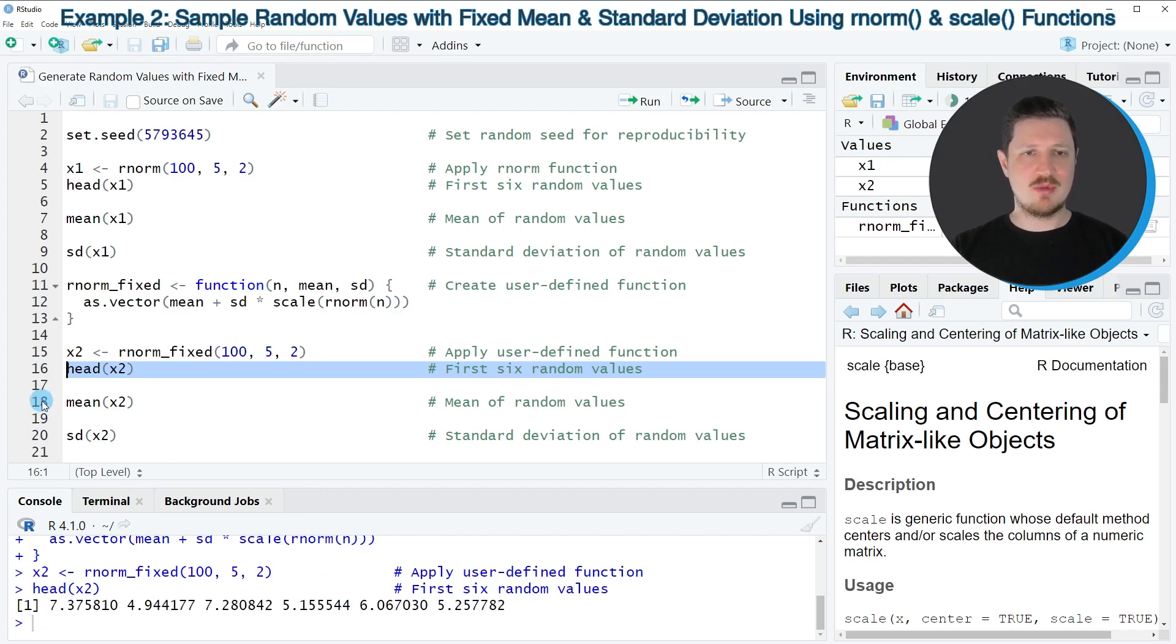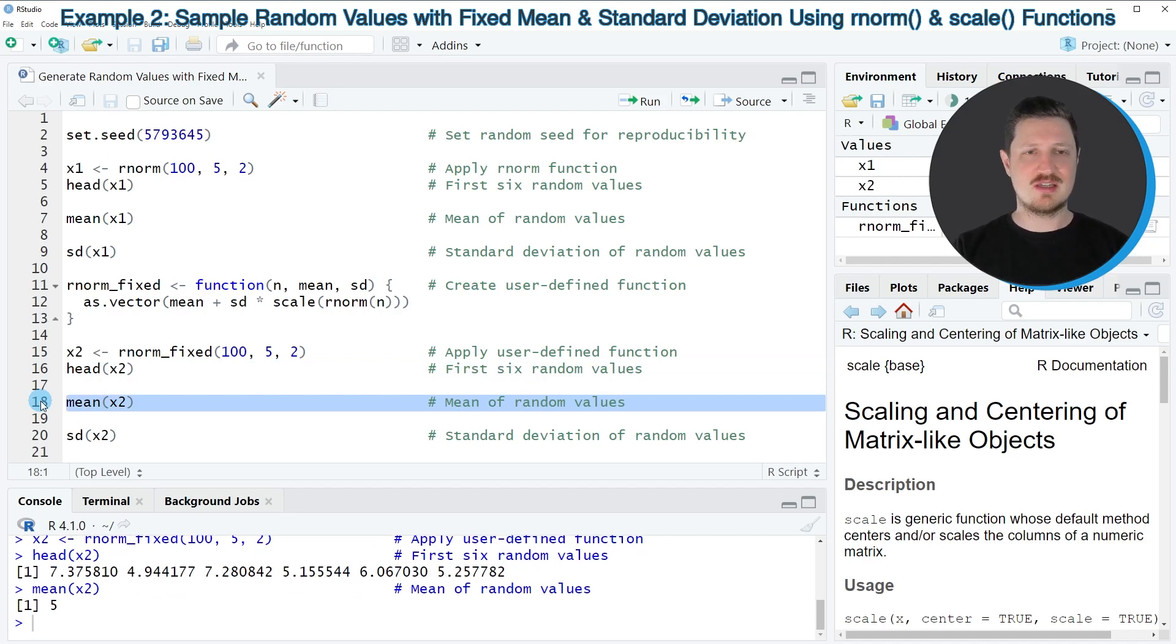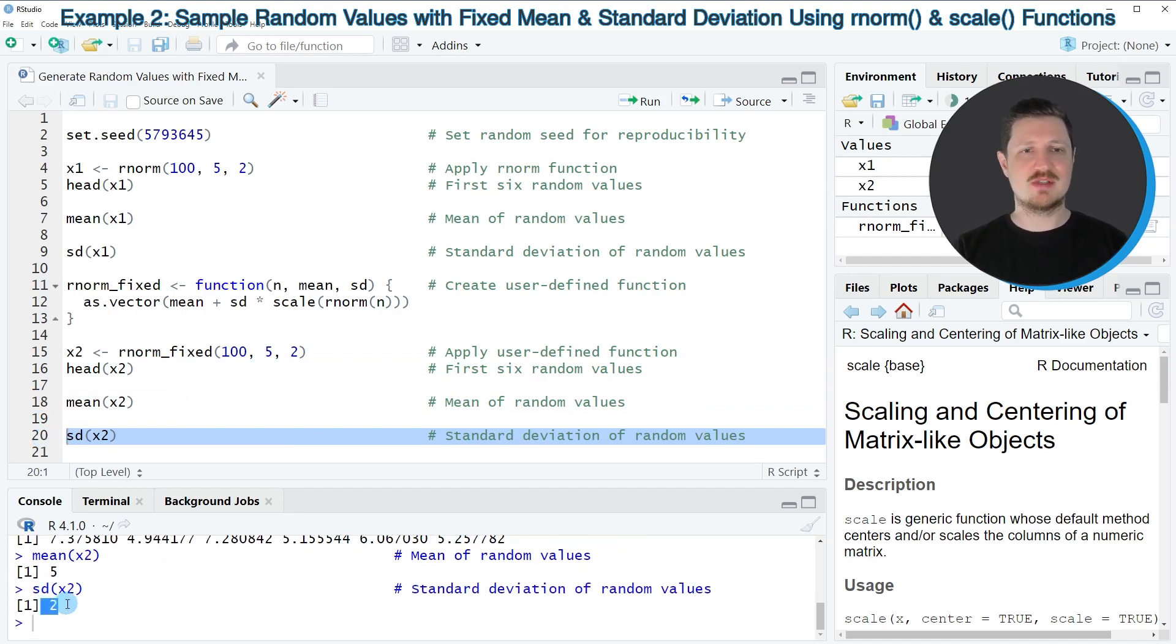However, if we now apply the mean function to these data, you can see that the mean is exactly 5, and the same is true for the standard deviation. So if we apply line 20 of the code, you can see that the standard deviation is exactly 2.